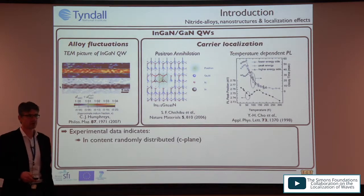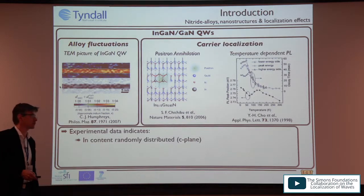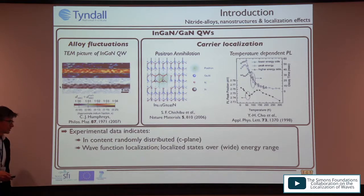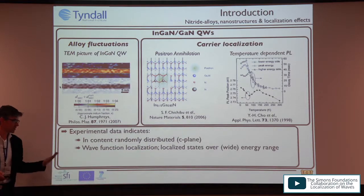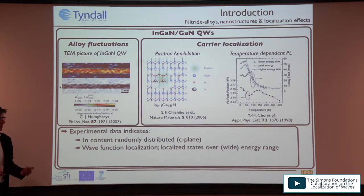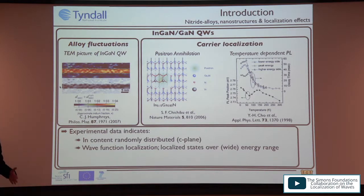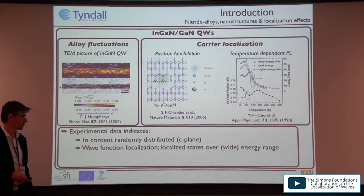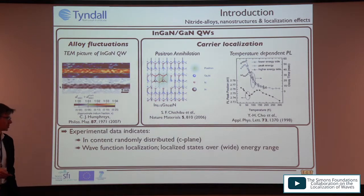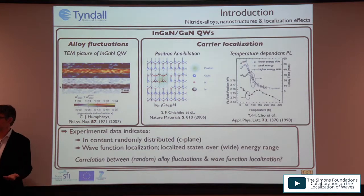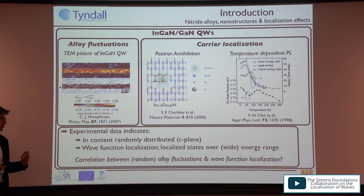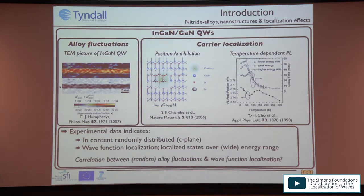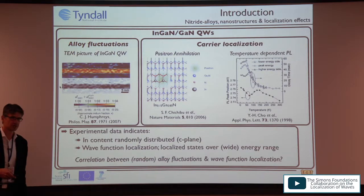The S-shape behavior — a redshift of the PL peak energy with increasing temperature, then a blueshift, then a redshift again — is explained by thermal redistribution of carriers between localized states. This gives strong indication of wave function localization effects, and we should also expect a range of localized states in energy. The question we wanted to address is: what are the correlations between the simplest approximation of a random alloy and wave function localization effects?